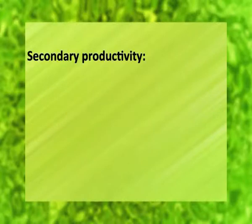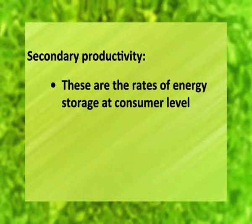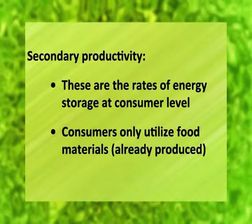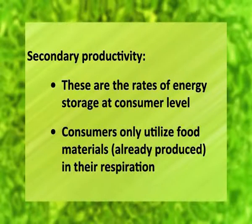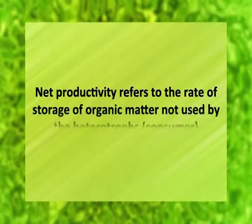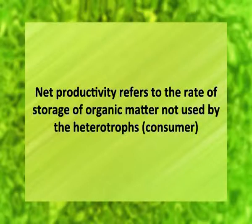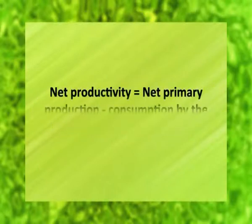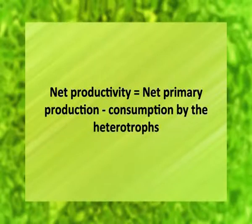Now, secondary productivity. These are the rates of energy storage at the consumer level. Since consumers only utilize food materials already prepared by producers in their respiration, simply converting the food matter to different tissues by an overall process. The secondary productivity is not divided into gross and net amounts. Net productivity refers to the rate of storage of organic matter not used by the heterotrophs, i.e., consumers — that is equivalent to the net primary production minus consumption by the heterotrophs during the unit period.